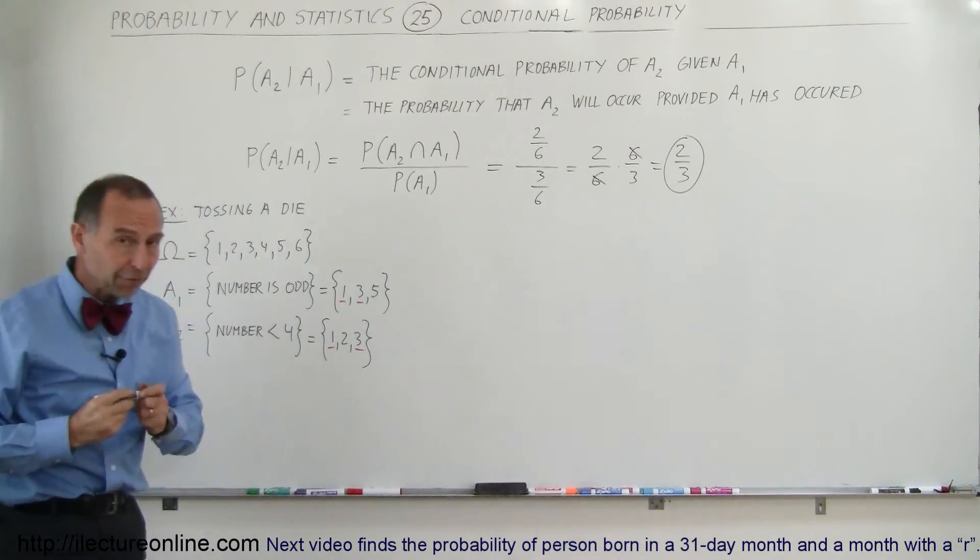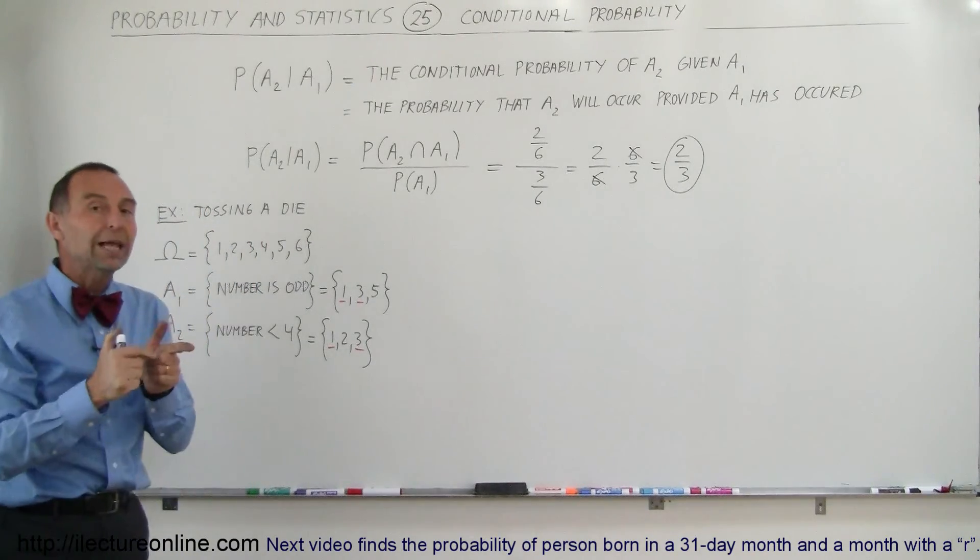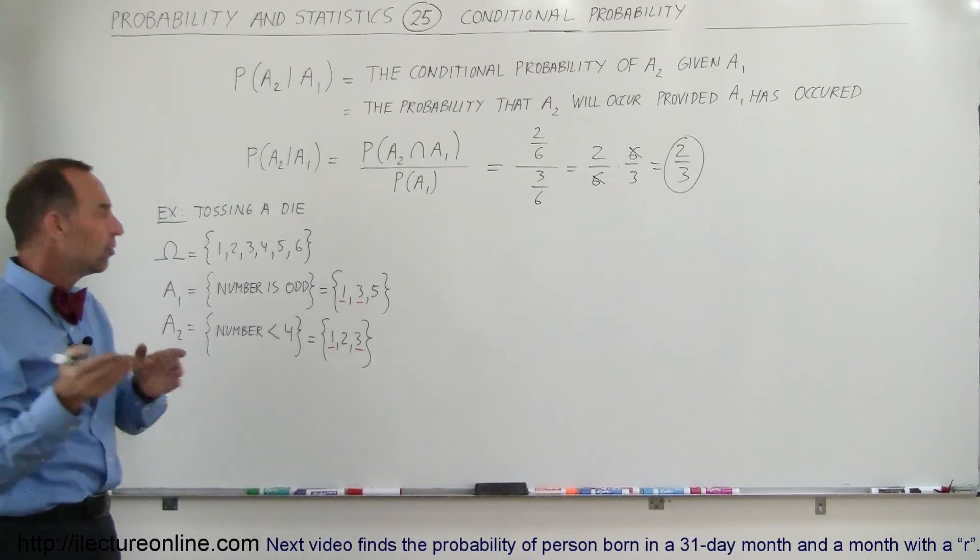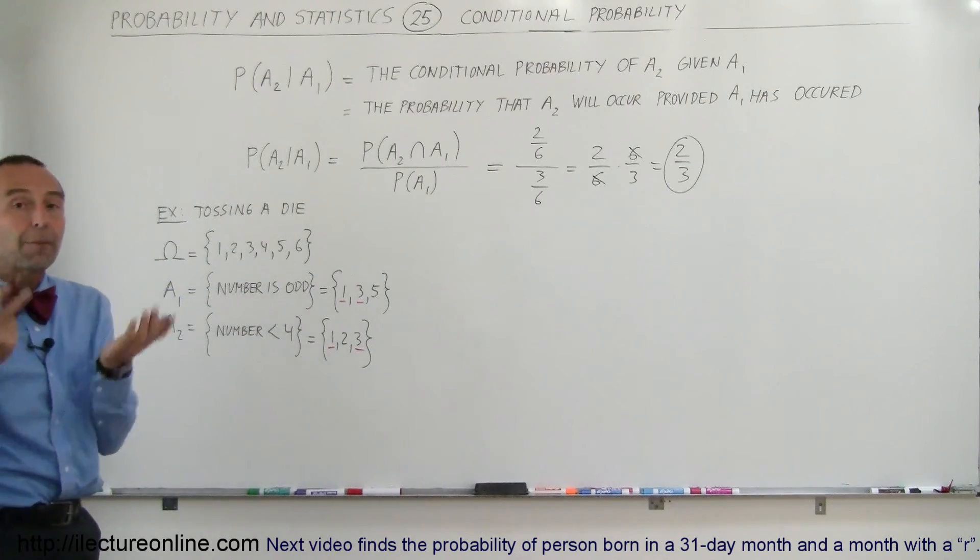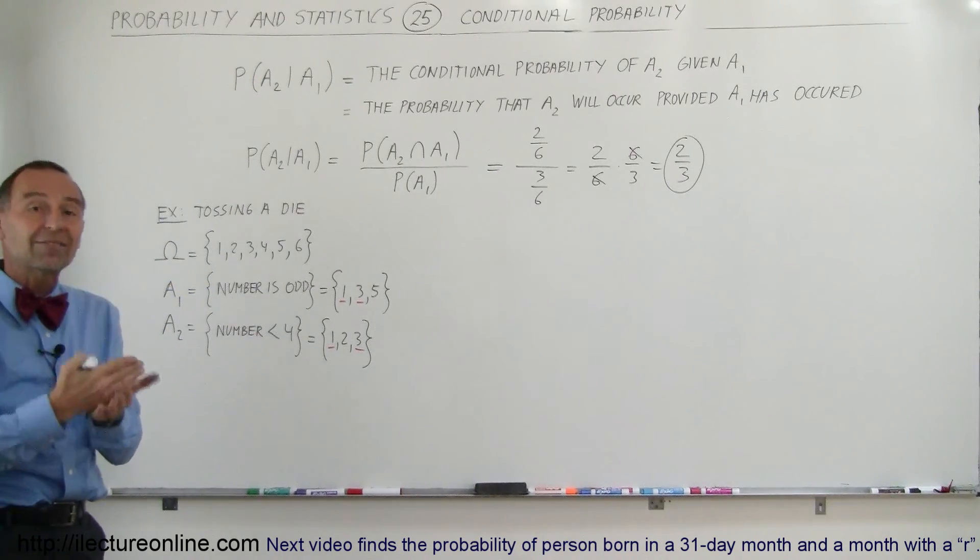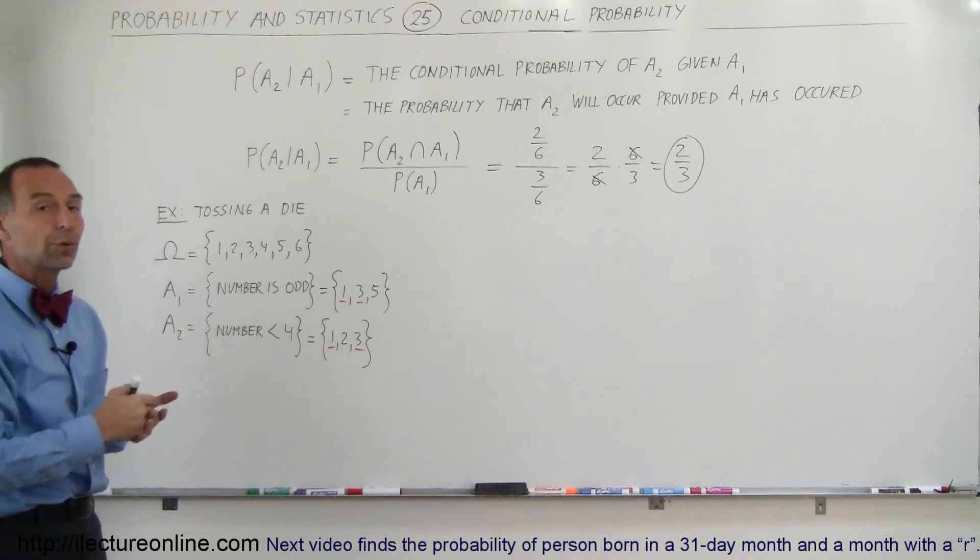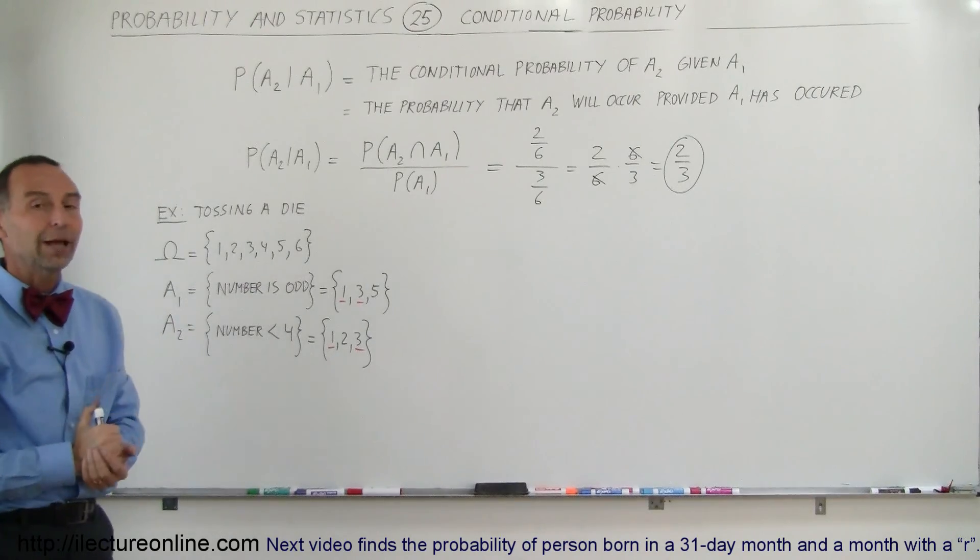That means that if we toss a die and we know that the number is odd, then the probability that the number will also be less than 4 is 2 to 3. And that's how we do that.